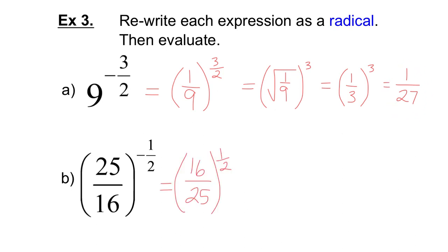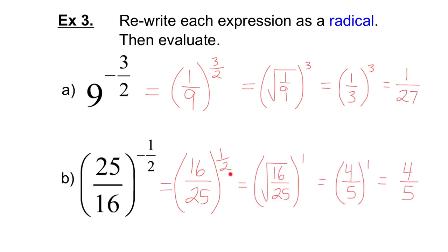For the next one, I have a negative exponent. So, I take the reciprocal of the base, which is 16 over 25, and raise it to a positive exponent. The denominator of the exponent is 2, so I'm taking the square root. The square root of 16 is 4. The square root of 25 is 5. So, I have 4 fifths to the exponent 1, which is 4 fifths.